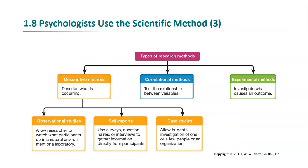There are numerous types of research methods used in science, and in psychology we use several of these. We may describe what is happening, we may look for a correlation — which tests a relationship between two or more variables — or we may use the gold standard, the experiment, which investigates cause and effect.